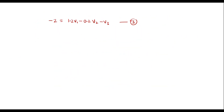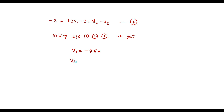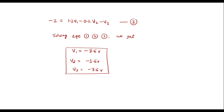Now equations 1, 2, and 3 can be solved directly using a calculator in equation mode. Solving the three equations, we get: V1 equals minus 8.6 volts, V2 equals minus 3.6 volts, and V3 equals minus 7.6 volts. This is the required result. Thank you for watching.